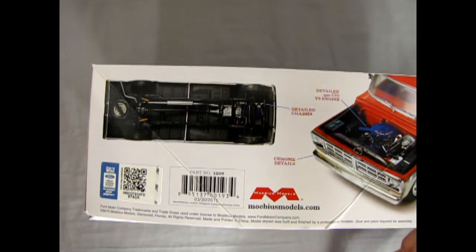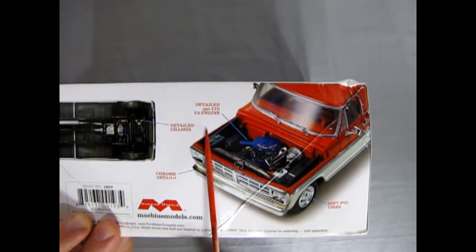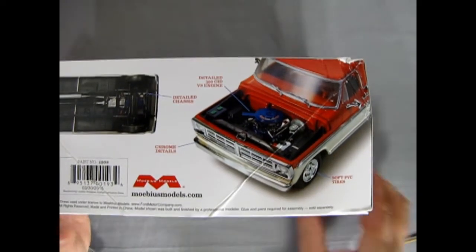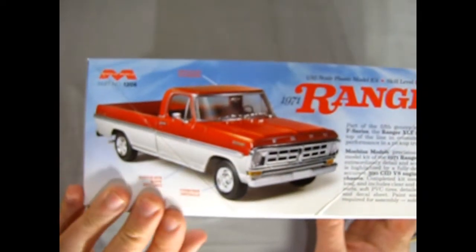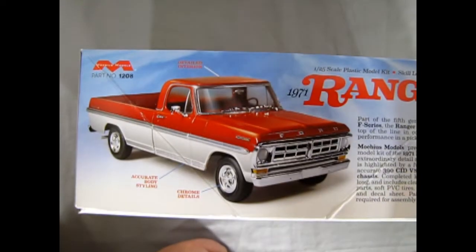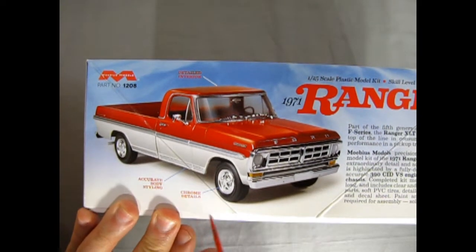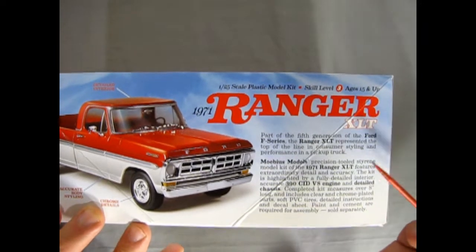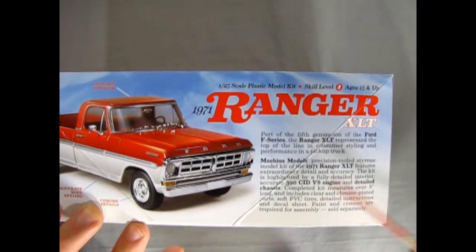There's our nice photo of our engine, chrome on the front, soft PVC tires. I think there's one of these running around High River, a real one. And then again there's our box art which is much like the actual Ford sales brochure of the time. We got accurate body styling, chrome details, and here it says part of the fifth generation of the Ford F series, the Ranger XLT represented the top of the line in consumer styling and performance in a pickup truck.